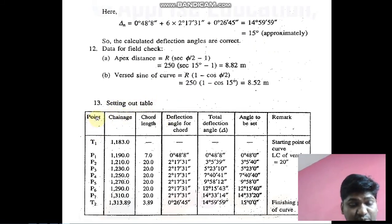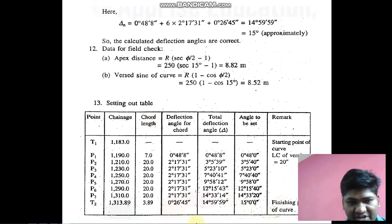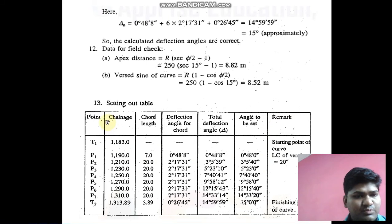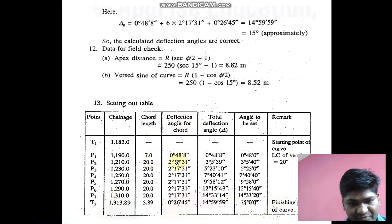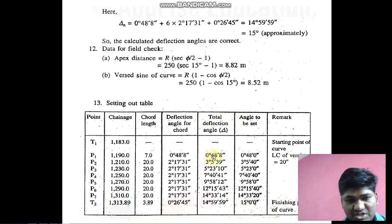Now the setting out table — this is very important. The columns are: point, chainage, chord length, deflection angle, total deflection angle, angle to be set, and remarks. T1 is the initial tangent point, T2 is the final tangent point, and the intermediate entries are points on the curve. We fill in the chainage by adding peg intervals, then chord lengths as already calculated, and then the deflection angle for each chord.